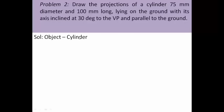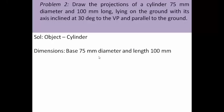The object in this case is a cylinder. The base is circular and the top is also circular, with a diameter of 75 mm. The length is 100 mm. It's lying on the ground, so one generator of that cylinder is always in absolute contact with the horizontal plane. The axis is inclined at 30 degrees to the VP, so phi is equal to 30 degrees — the angle made with the vertical plane.